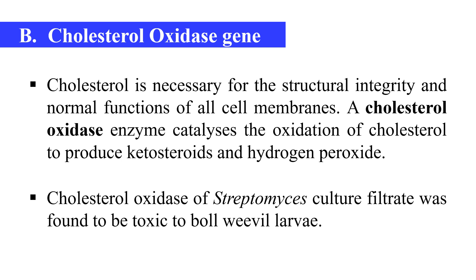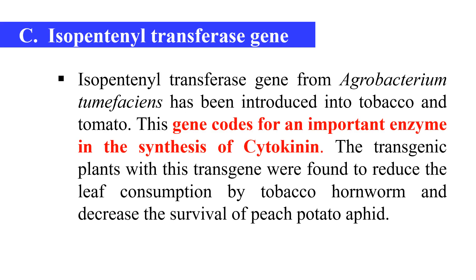The cholesterol oxidase gene can be taken from Streptomyces to develop a transgenic plant. A third example is the isopentanyltransferase (IPT) gene, which can be isolated from Agrobacterium tumefaciens and was introduced into tobacco and tomato. This gene codes for an enzyme involved in the synthesis of cytokinin. Transgenic plants with this transgene were found to reduce leaf consumption by tobacco hornworm and decrease the survival of peach potato aphids.